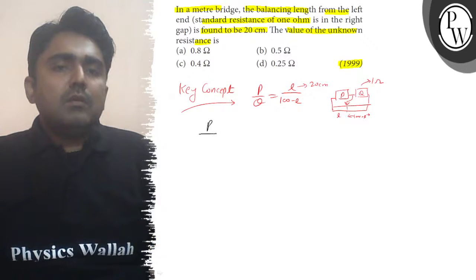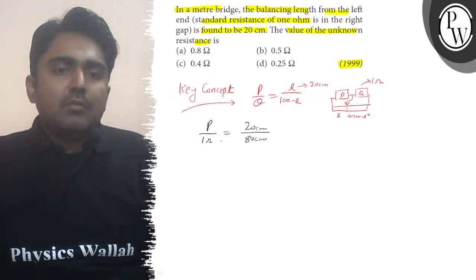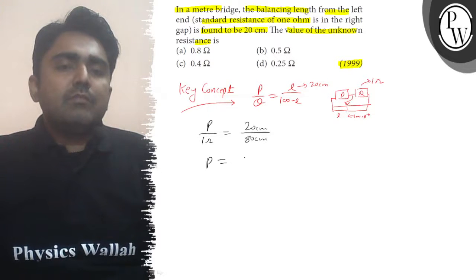P upon 1 ohm is equal to 20 cm divided by 100 minus 20 cm. P will be equal to 1 by 4, or you can say 0.25 ohm.